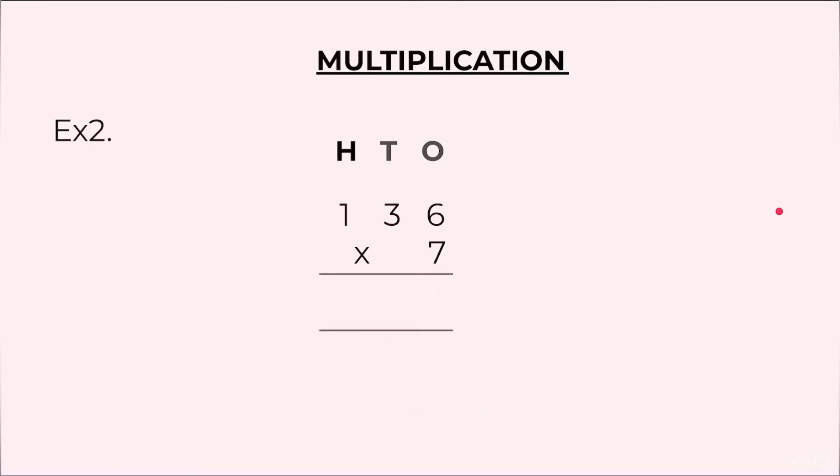Another example: 136 into 7. We will start by multiplying 7 into 6. 7 sixes are 42, 4 at the top, 2 at the bottom. After that we will multiply 7 by 3. 7 threes are 21 and then we will add the 4 on top. 21 plus 4...